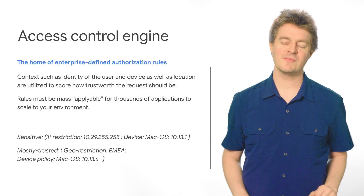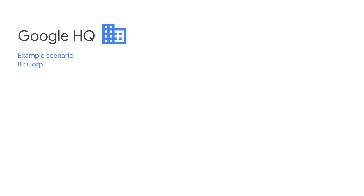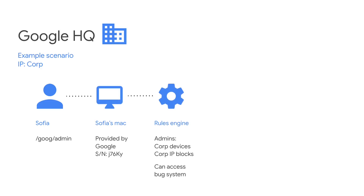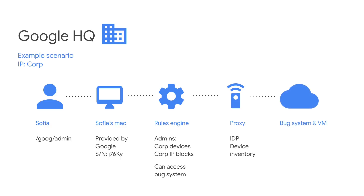Let's look at something a little more specific. Let's say an employee is sitting inside Google's headquarters. At the identity level, we know it's Sophia, and they're logged in. We know the MacBook, because we have its device ID, and that it's running the right operating system that we trust. We also know they're coming from the right IP, and that it's a corporate device. So we know they can access the data they need, and the proxy applies that policy — this person on this device has access to the bug systems and the admin tools.